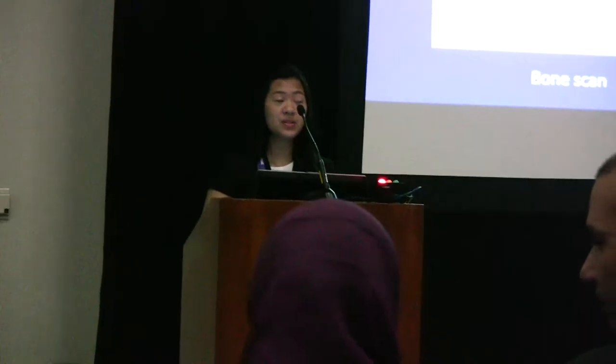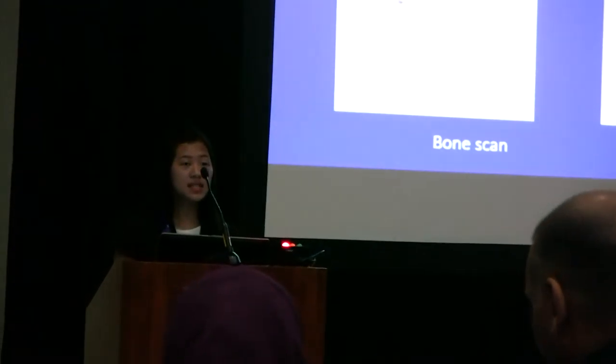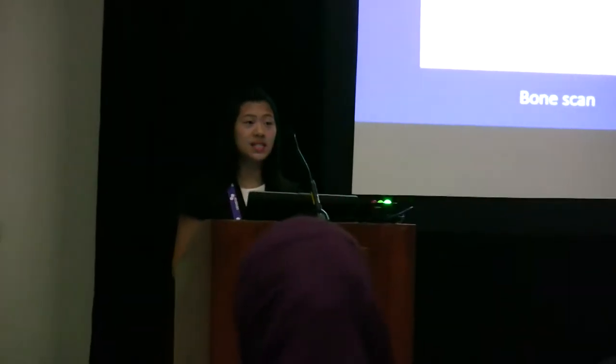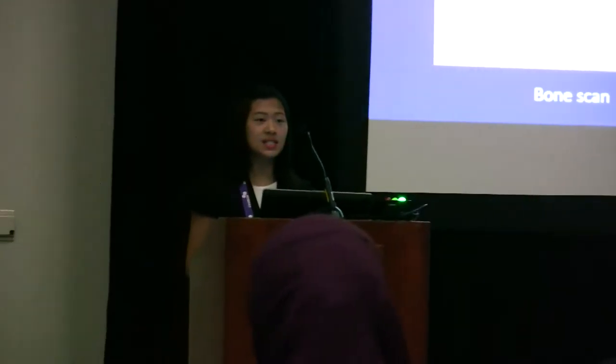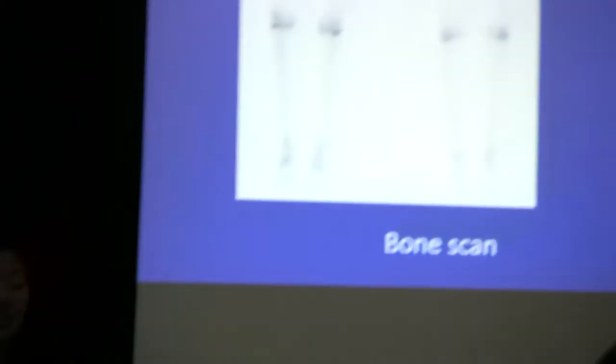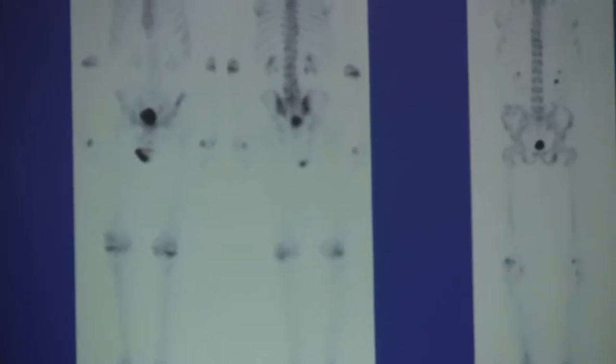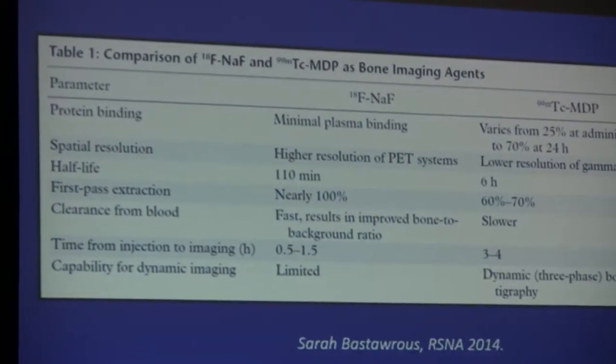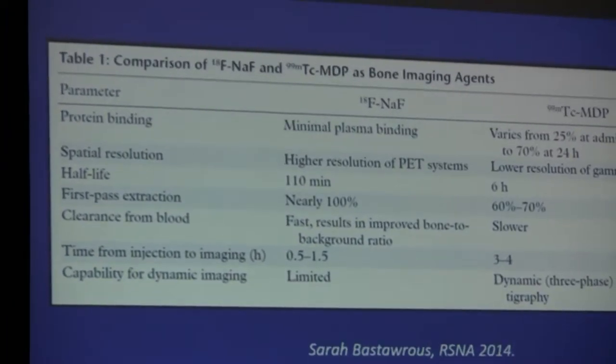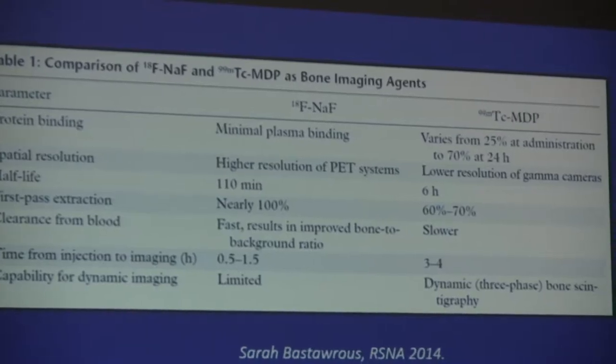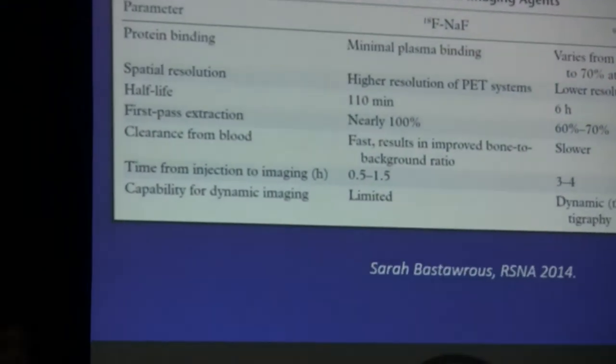For decades, the traditional bone scan was the standard imaging modality for detecting metastasis and other skeletal diseases. However, since then, Sodium Fluoride PET has gained popularity, and it gives improved results such as better contrast and its ability to join with CT to create fused images for direct comparison. There are many advantages of Sodium Fluoride PET over the traditional bone scan, such as a higher sensitivity and better spatial resolution.